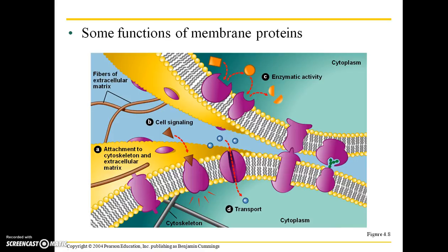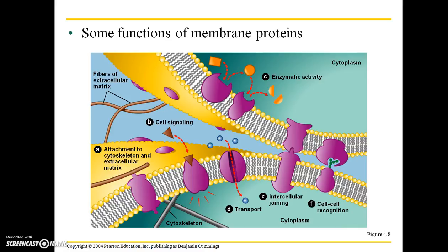There are transport proteins. So if there's a molecule that's too big to just diffuse into or out of the cell, a helper protein will conduct those molecules through a channel. There's intercellular joining for structural support from cell to cell, and there's also cell-cell recognition, which is important for our immune system, especially when recognizing our own cells as safe.